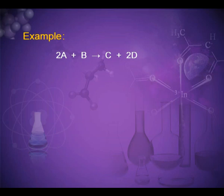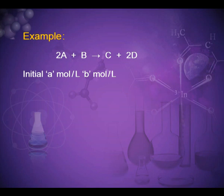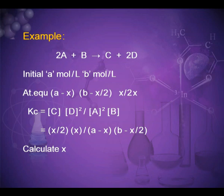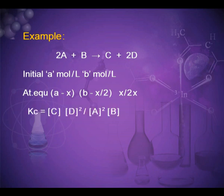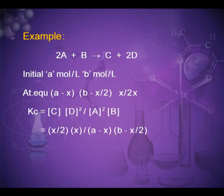For example, consider a general reaction 2A + B ⇌ C + 2D. Initially, moles of 2A is 'a' and moles of B is 'b', with no product present. At equilibrium, if moles of D formed is X, then moles of C is X/2, moles of 2A is a − X, and moles of B is b − X/2. So Kc = [C][D]² / [A]²[B] and the value of X can then be calculated.